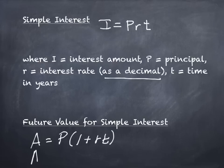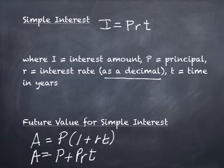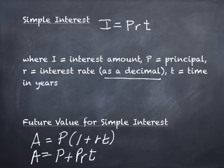The other form of the formula looks like A equals P plus PRT. These are related — you just distribute the P through the parentheses. Conceptually, P is the principal, and PRT is the interest, so the principal plus the interest gives you the total amount at the end. Which formula you use depends on what you're trying to find.